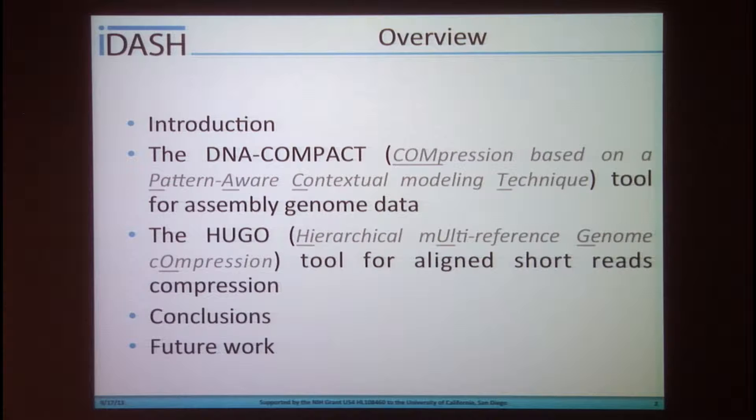Here is the outline of today's presentation. We will start with a brief introduction of genomic data compression. Then I will introduce novel genomic data compression tools proposed by our team. The first is named DNA Compact, which stands for compression based on a pattern-aware contextual modeling technique — a tool designed for genome assembly data compression. The second is the Hugo tool, a hierarchical multi-reference genome compression designed for aligned short-read file compression. Finally, I will draw the conclusion and discuss our future work.